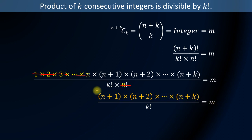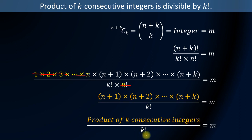This expression tells us that product of any k consecutive integers is divisible by k factorial. Now we can write it as product of k consecutive integers when divided by k factorial gives us an integer.